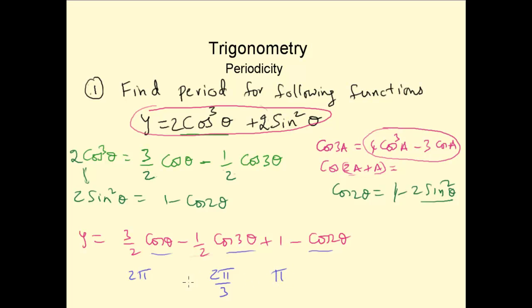Now let's find the LCM of 2 pi, 2 pi over 3, and pi. That is equal to 2 pi. So the period for 2 cos cube theta plus 2 sin squared theta would be equal to 2 pi.